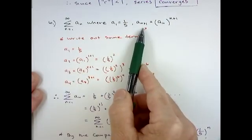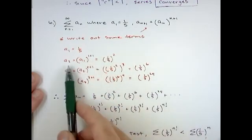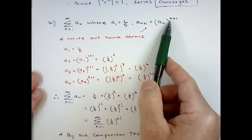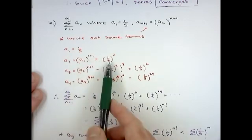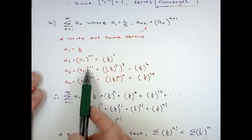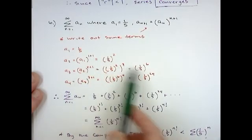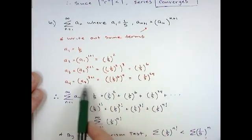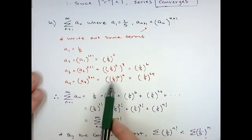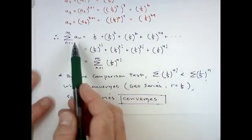So a one was given as one fifth. A two, the next term would be the term before it raised to the n plus one. So a two, my value of n would be one here, right? That would be a one to the one plus one, which is one fifth squared. A three would be a two to the two plus one, which is a two is right there. It's one fifth squared cubed is one fifth to the sixth. And then a four is going to be that term now raised to the fourth. So I get one fifth to the 24th power.